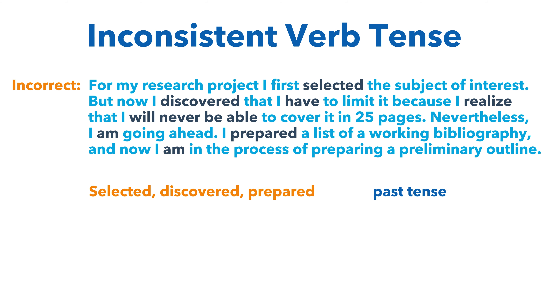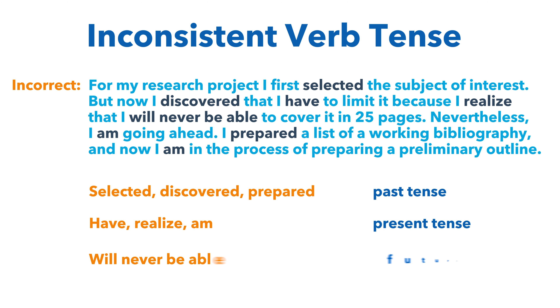The words 'selected,' 'discovered,' and 'prepared' are in the past tense. The words 'have,' 'realized,' and 'am' are in the present tense. And 'will never be able' is in the future tense.